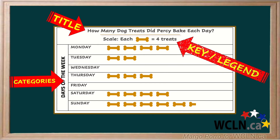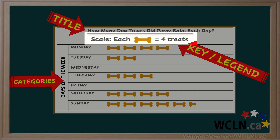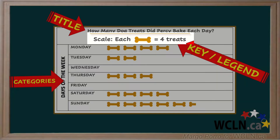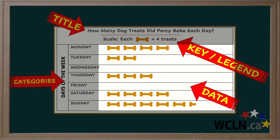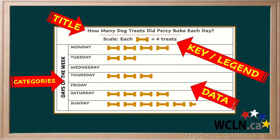The key, or legend, shows you the symbol and the scale. What is the value of each symbol? In this pictograph, the symbol is the dog bone. Each dog bone represents four dog treats. The data is shown in the symbols.